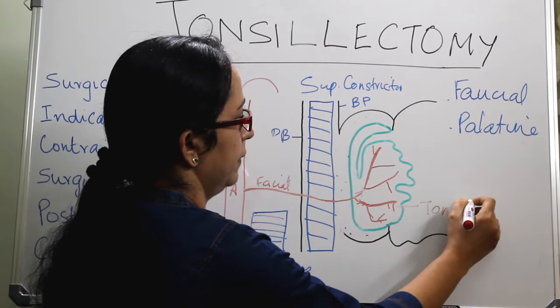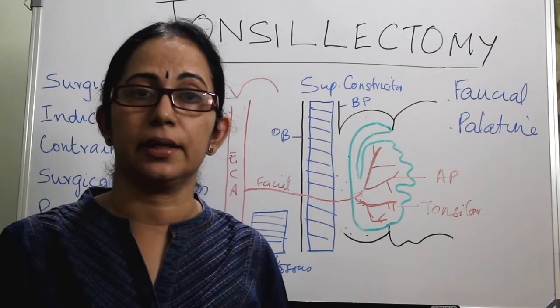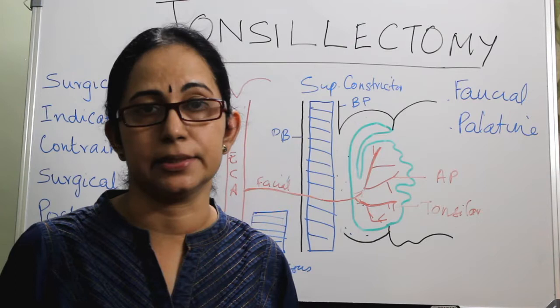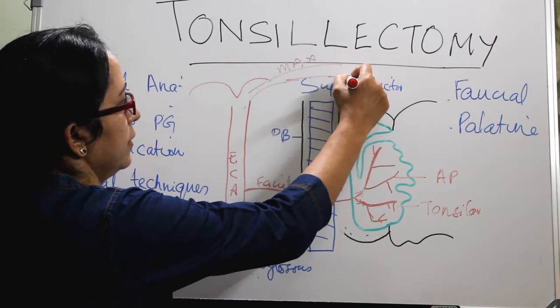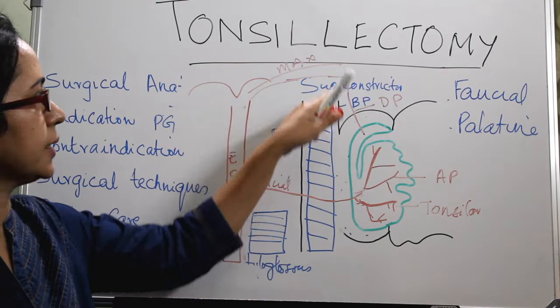If there is an ascending palatine artery, there should be a descending palatine also. The descending palatine artery is a branch of the maxillary artery and also supplies the tonsil. So from the facial artery: tonsillar branch and ascending palatine branch. From the maxillary artery: descending palatine branch. The lingual artery, another branch of the external carotid, supplies the tonsil through the dorsalis linguae arteries.